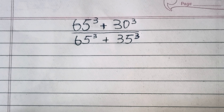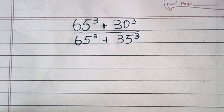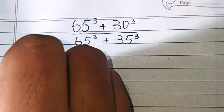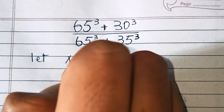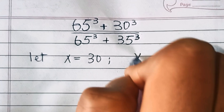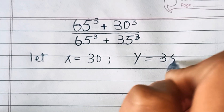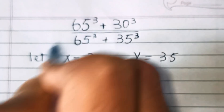Welcome. We will solve the mathematical problem: (65³ + 30³) / (65³ + 35³). First, we let x equal to 30 and y equal to 35, so that x plus y is equal to 65.